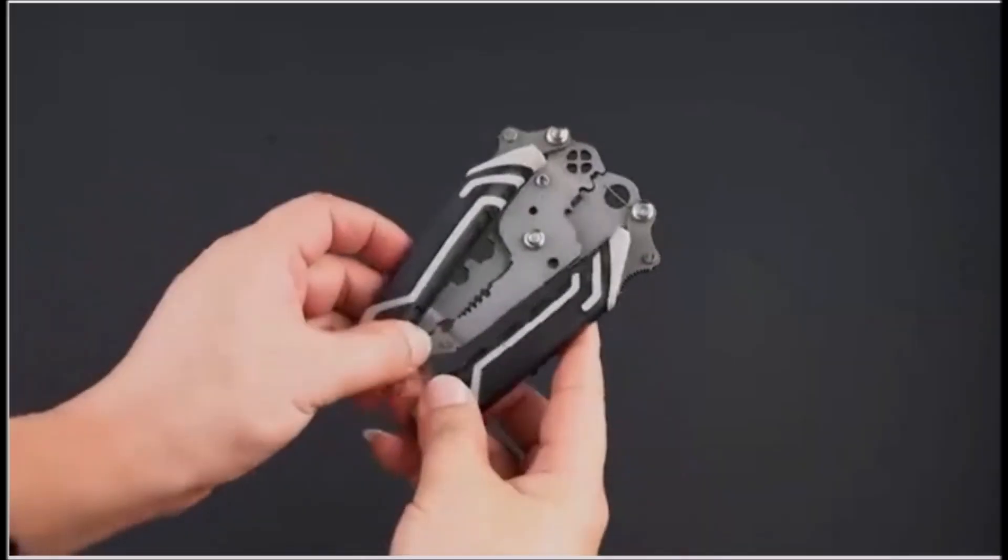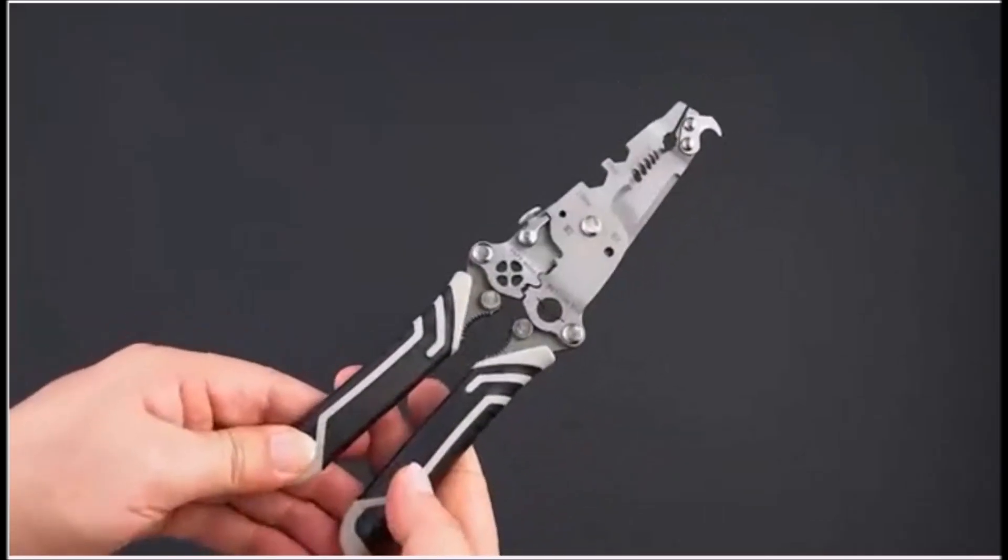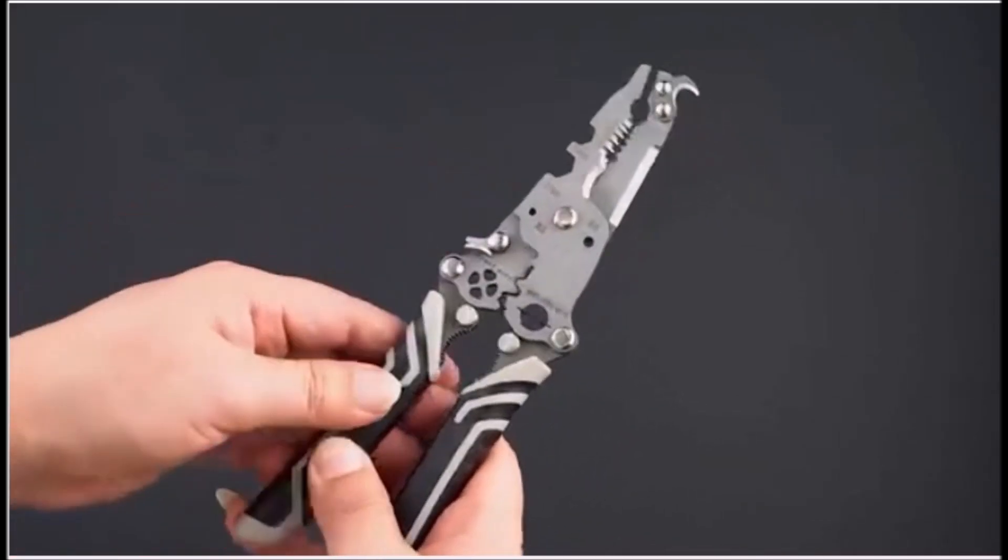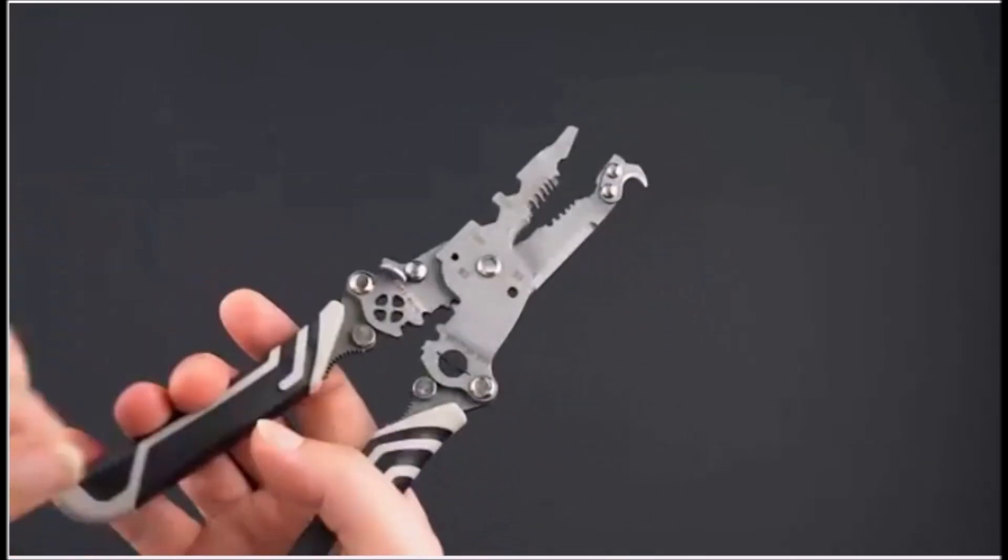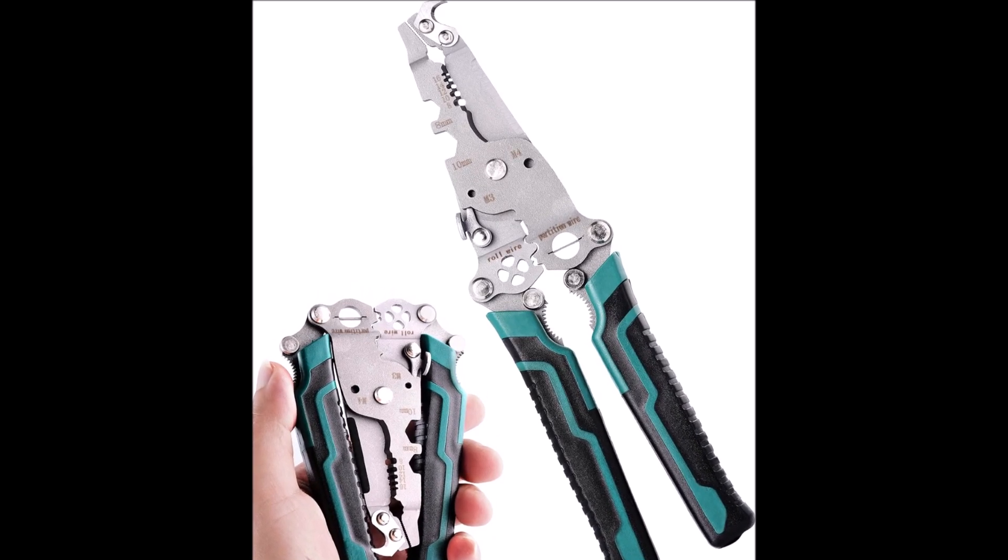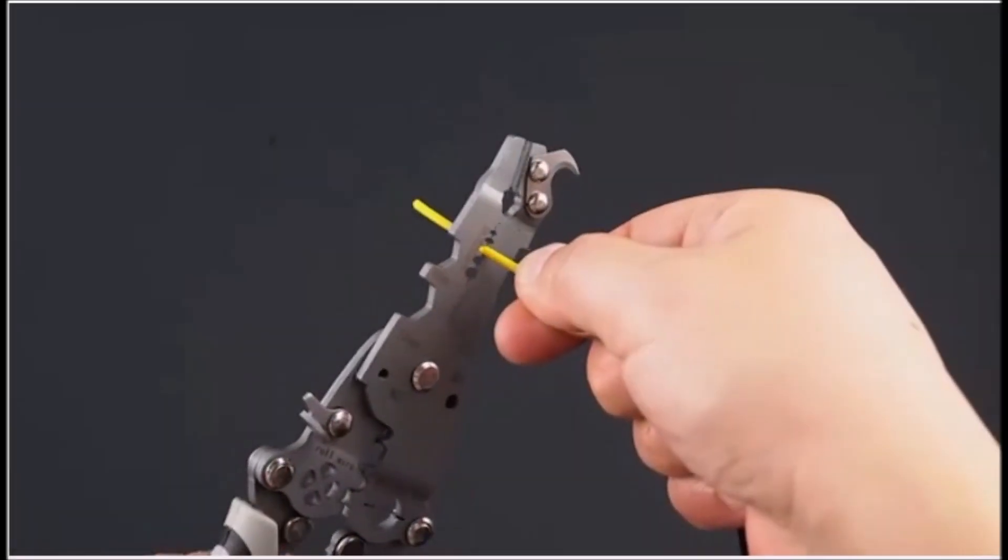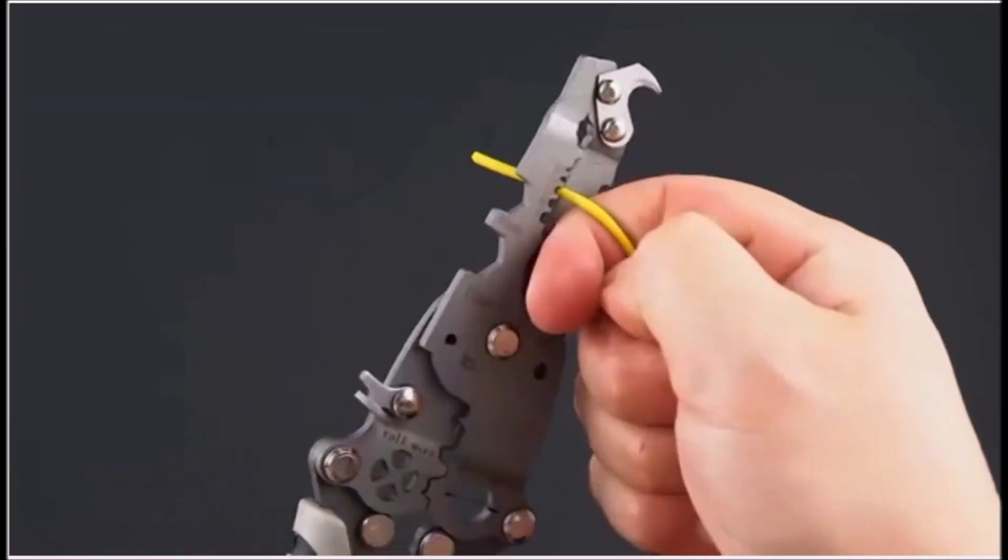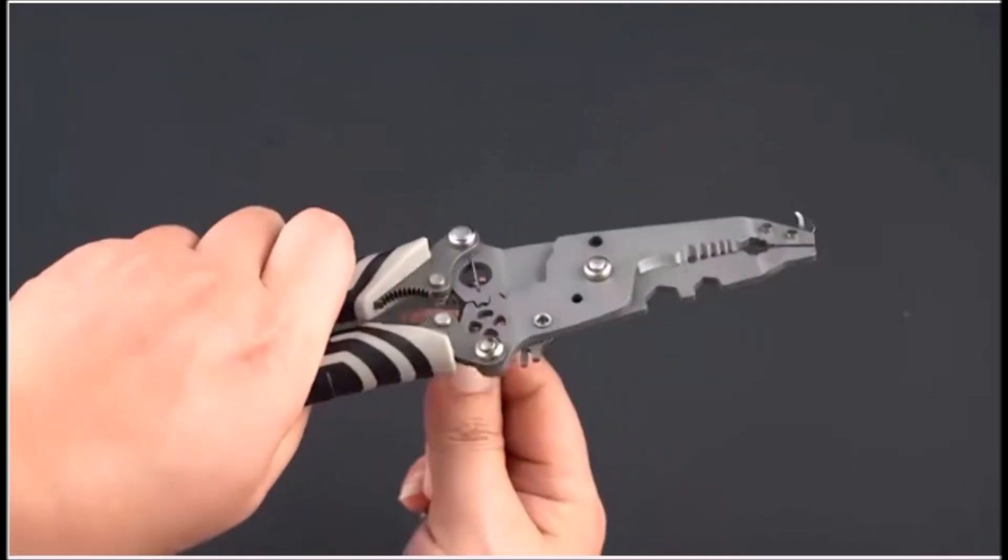Number six. The 18 in one foldable wire stripper is a compact multi-tool built for versatility and durability. It handles wire stripping, cutting, trimming, crimping, and even twisting with ease. Multiple stripping holes support wire sizes from 0.08 to 1.6 millimeters, making it suitable for a wide range of electrical tasks. The sharp cutting blade, made from heat-treated chrome vanadium steel, delivers clean and accurate cuts, while the stainless steel body adds long-term strength.